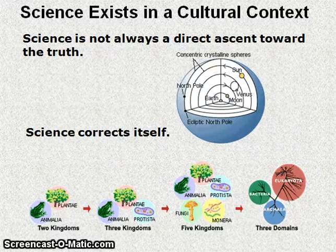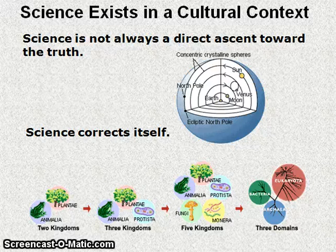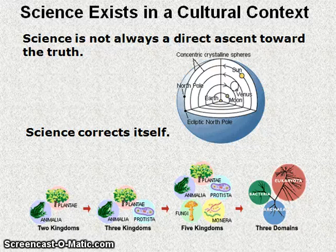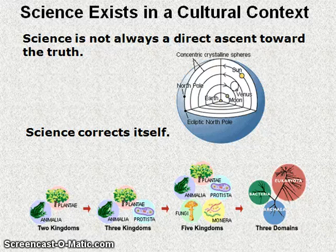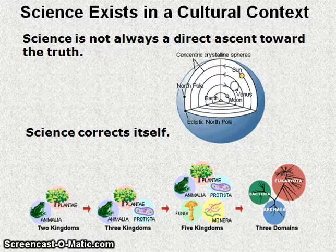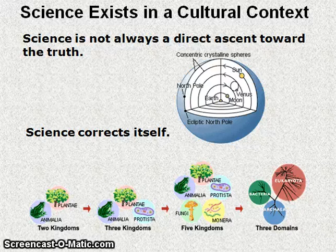Science exists in a cultural context. Science is not always a direct ascent towards the truth. The first image here is the geocentric model, or the Ptolemaic model, which was used for over 1,500 years — but it wasn't correct. We now know that the heliocentric model, which places the sun in the center of the solar system, is a more accurate depiction of Earth's position. This model was proposed by Copernicus, Galileo, and Kepler, but was not immediately accepted, especially by the Catholic Church — showing the important interplay between science and culture.